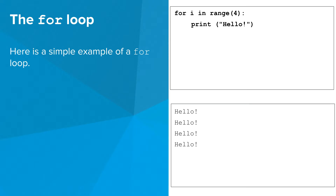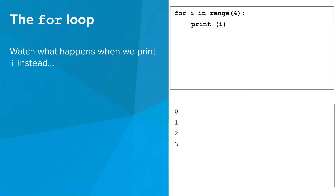The code inside the for loop repeats four times, so we print the word hello four times. Watch what happens when we print i instead. Notice that we go from zero to three. We'll explain more of this later.